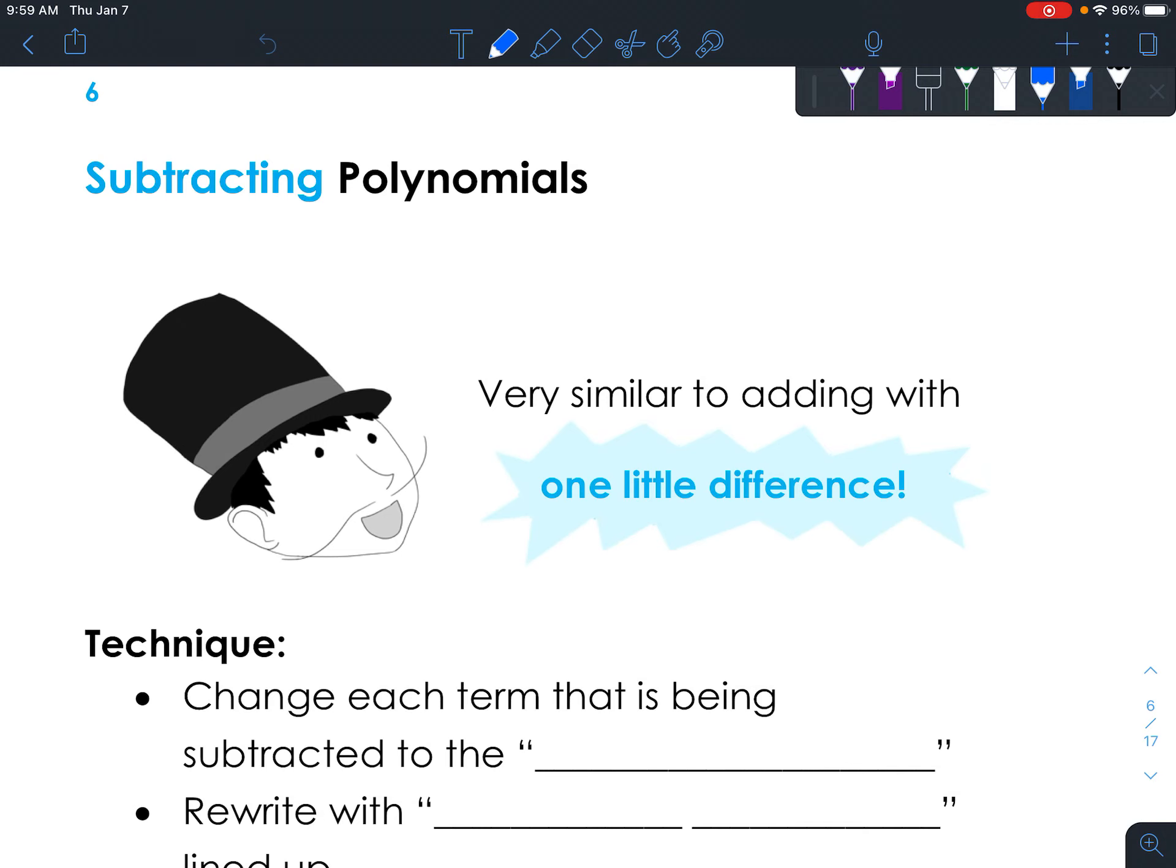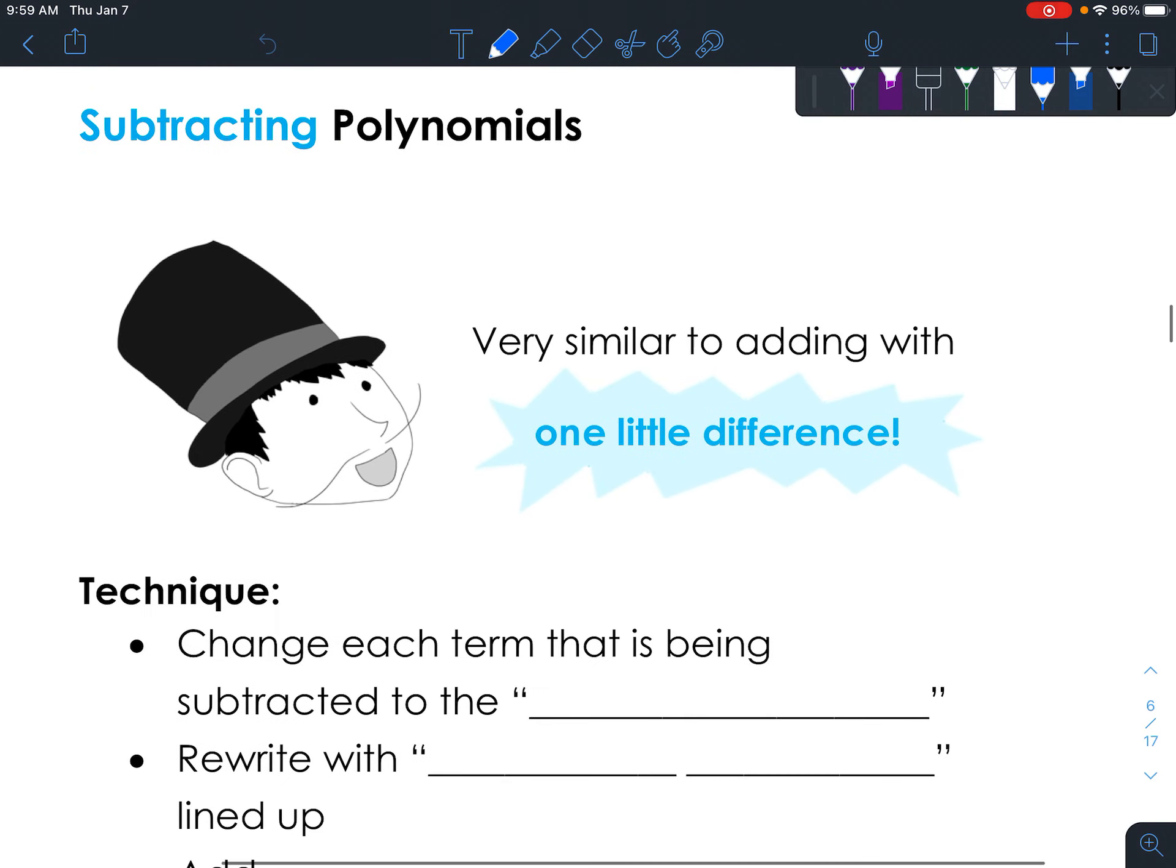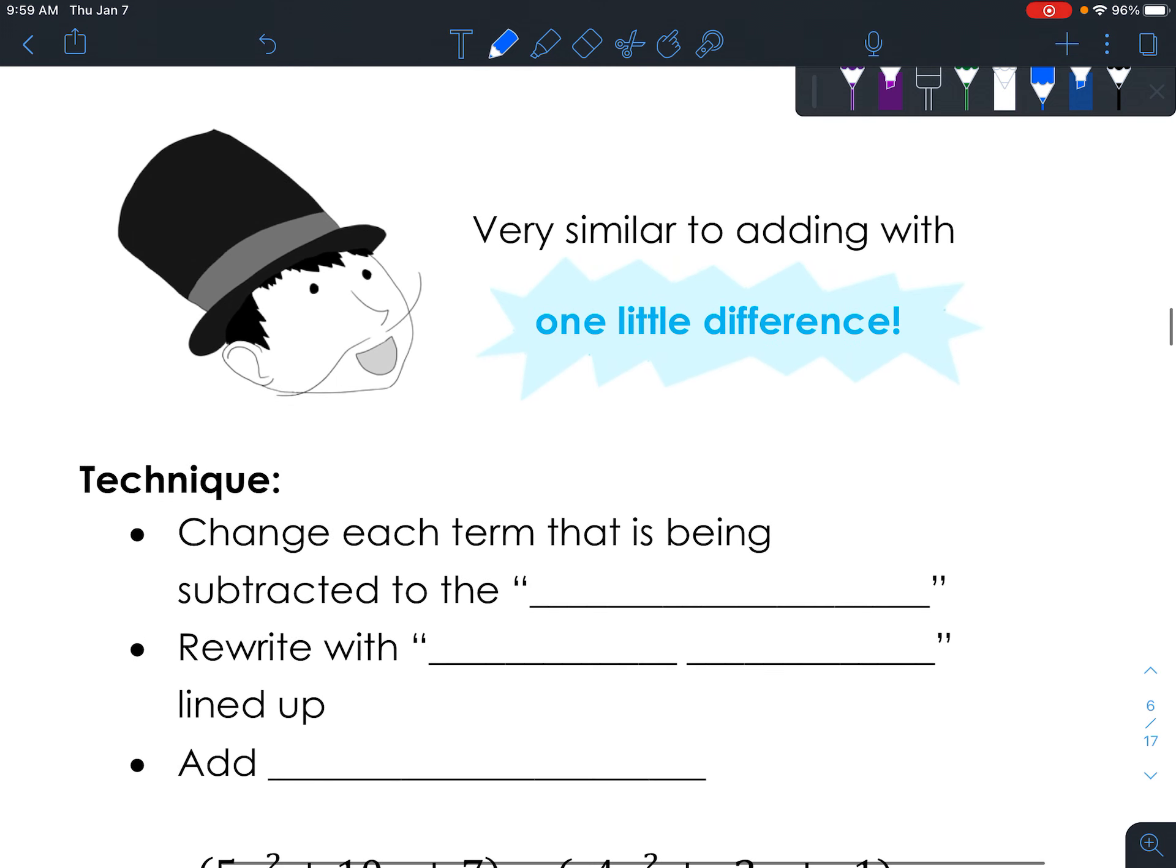Just like with regular adding and subtracting, it's super similar. And there's one little difference when you are subtracting polynomials. Let me use the highlighter. And that is that you have to change each term that's being subtracted to the opposite. That sounds a little complicated, but it's really not.